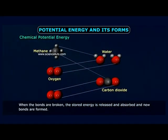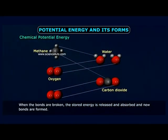Some forms of potential energy are: chemical energy, nuclear energy, elastic energy, and gravitational potential energy. Chemical potential energy is one form of potential energy which is stored in the bonds of atoms. Whenever you break down those bonds, that energy is released.